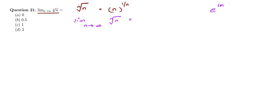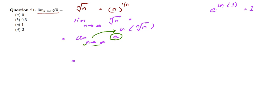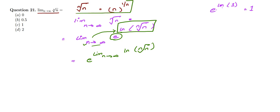As we know, e^(ln 1) = 1, and e and ln cancel out, leaving us with the value. So we can write the expression as: limit n→∞ of e^(ln(n^(1/n))). Since e has no n term associated with it, the limit can be moved into the exponent, giving us e raised to the power of limit n→∞ ln(n^(1/n)).